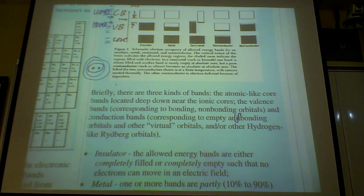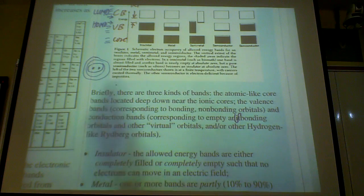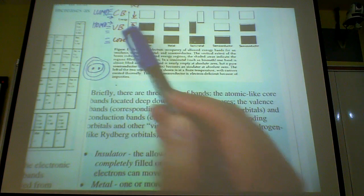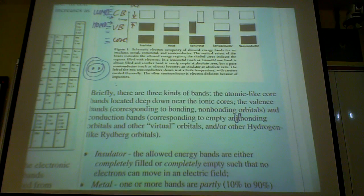If you apply, even apply a bias to this molecule, nothing can move, because they have no space, no empty orbital for it to move within the band. And so that's why it's insulated, you cannot conduct electricity, even if you apply a bias.